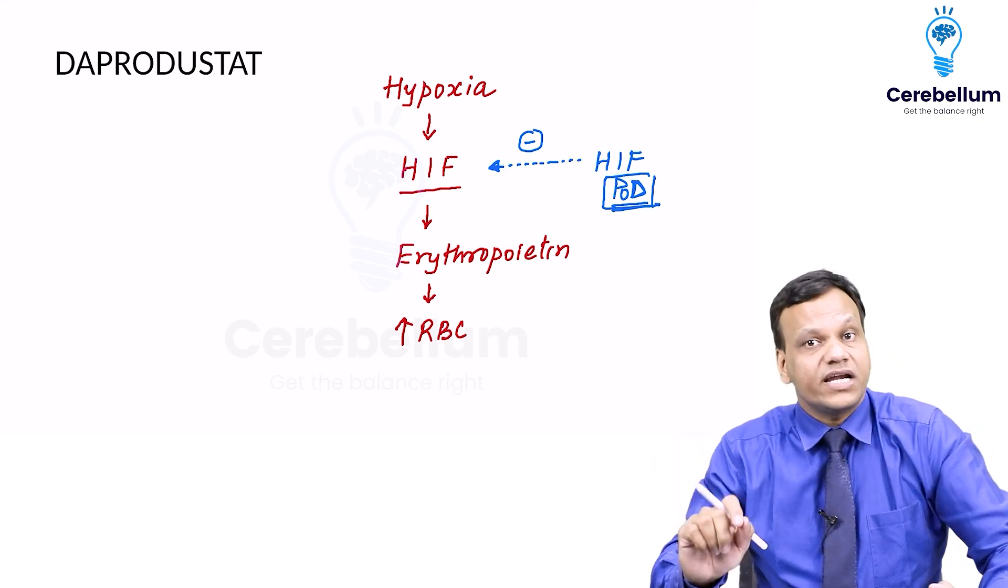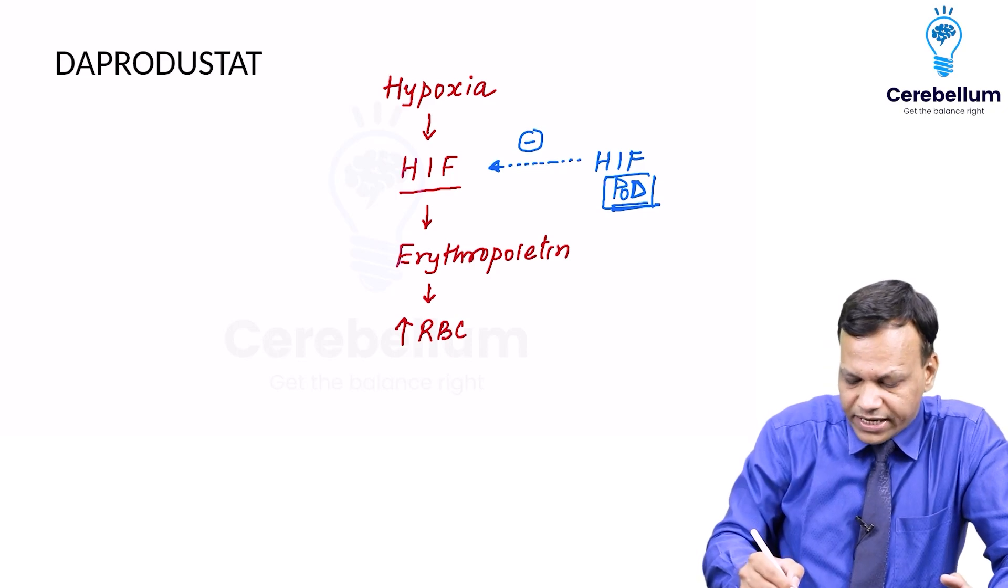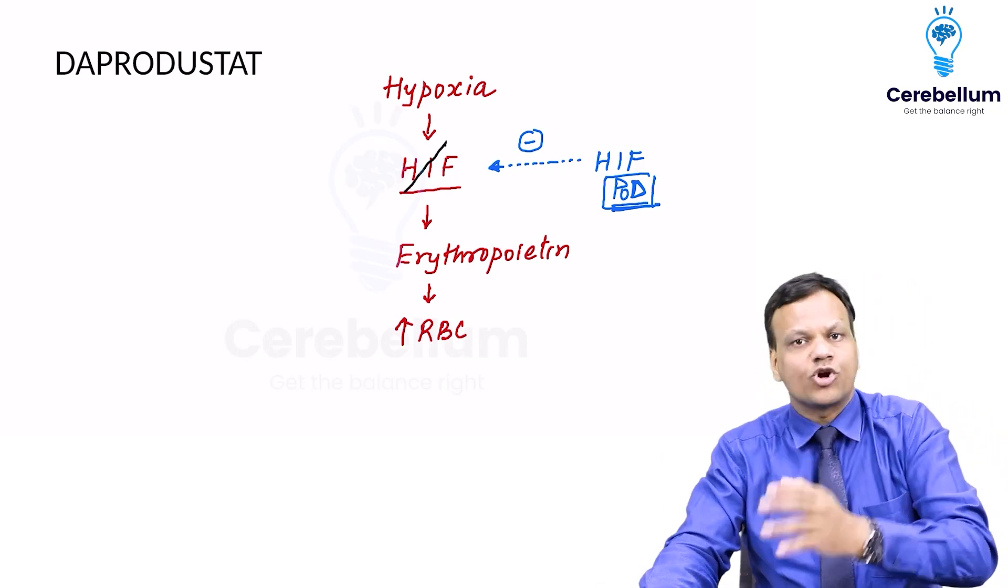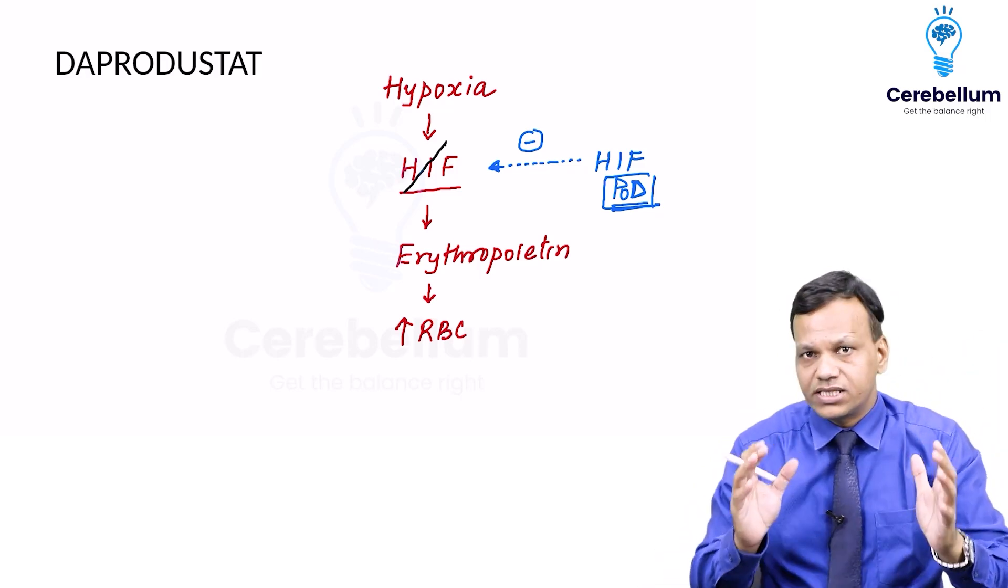Hypoxia inducible factor proline hydroxylase is the enzyme which will inhibit HIF. When HIF is inhibited, erythropoietin will not be produced. This is a normal physiological thing.